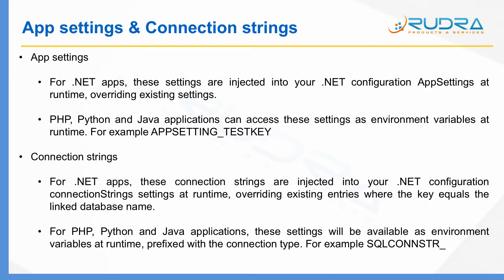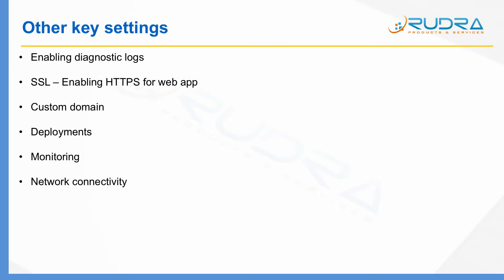However, there are other important settings. The first one is enabling diagnostic logs. You can enable diagnostic logs at different levels and different places — for example, web server level, application level. I'm going to discuss these diagnostic logs in full detail in the monitoring section of the course. The second one is SSL — you can enable HTTPS for your web app, and I'm going to show you what to configure in the security section of this course.